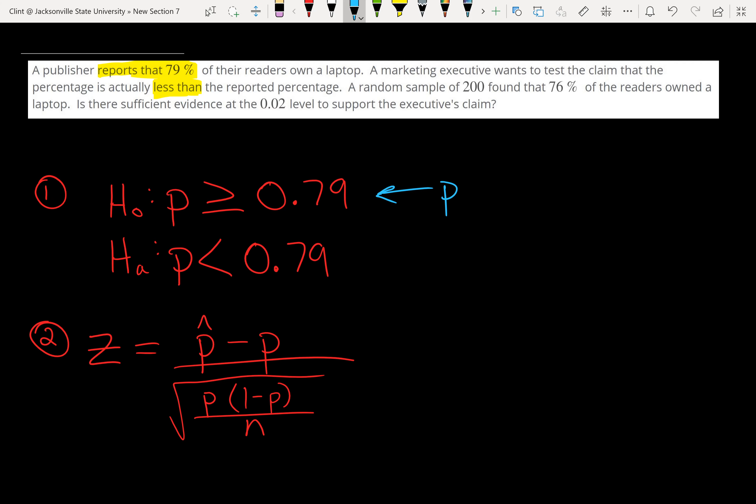So this number is our p. We need p-hat, our sample proportion. In our sample, our proportion is 76%, so this is p-hat. And then the only other number we need is the sample size. Here we have a sample of 200, so that is n, our sample size.